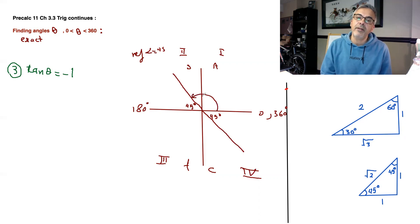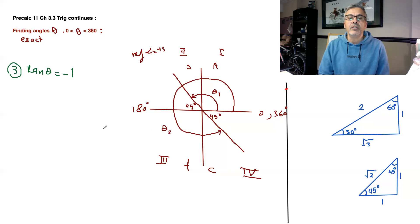So the first one will be this one. If you want to call it theta 1, and then the second one is going to be from 0 all the way to here, and that's theta 2. So theta 1 will be, if you go all the way to 180, take away 45 degrees, you'll end up with 135 degrees.